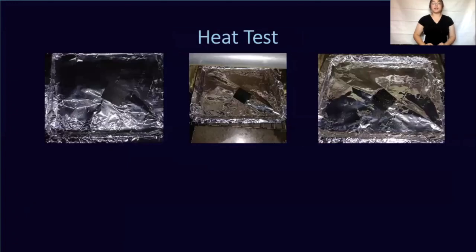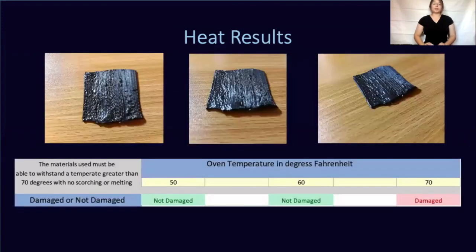Next is the heat test. In increments of 10 degrees, I inserted the prototype material into a conventional oven to test durability against heat. After 50 degrees it was not damaged, and at 60 degrees it was not damaged, but at 70 degrees it started melting. Unfortunately, this means this test did not pass.